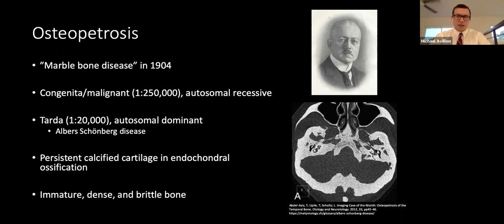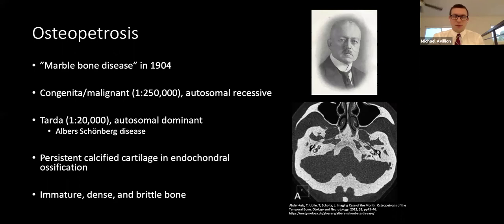There are two main types: the congenita or malignant form, which is autosomal recessive, and the tarda or autosomal dominant form. The autosomal recessive form results from various mutations affecting osteoclasts, leading to cerebral calcifications, blindness, obliteration of the marrow cavity causing pancytopenia, and often death before 10 years old secondary to hemorrhage, anemia, or infection.